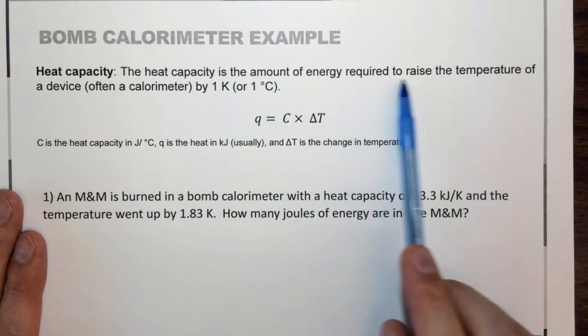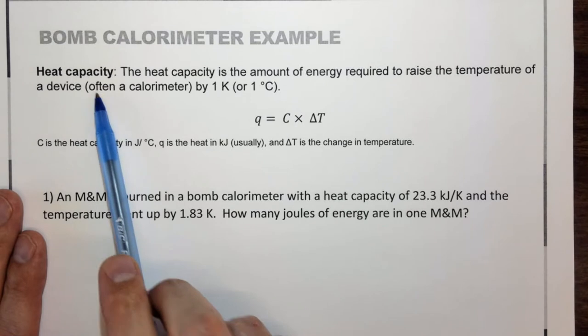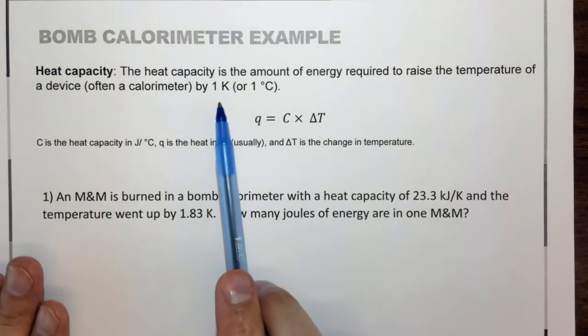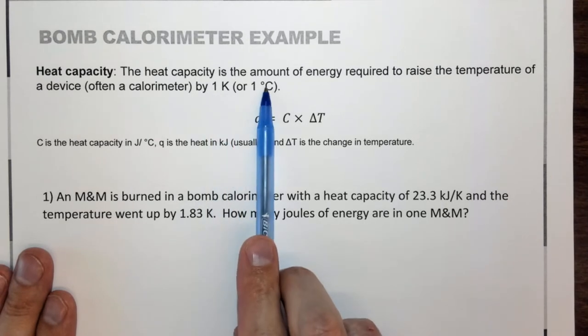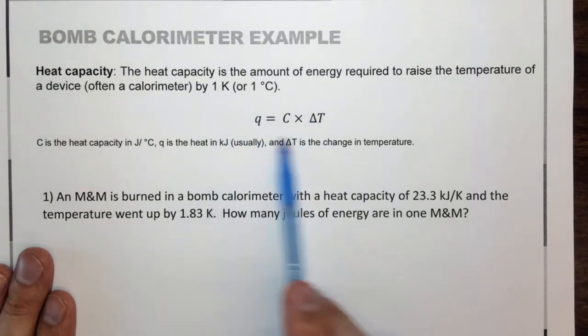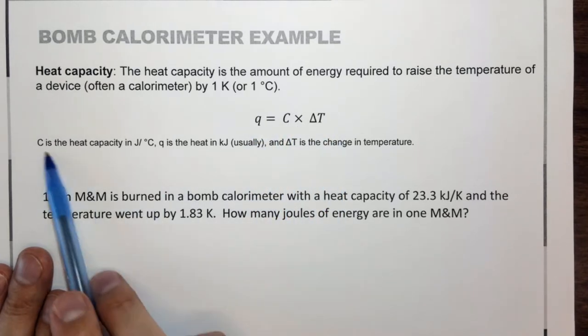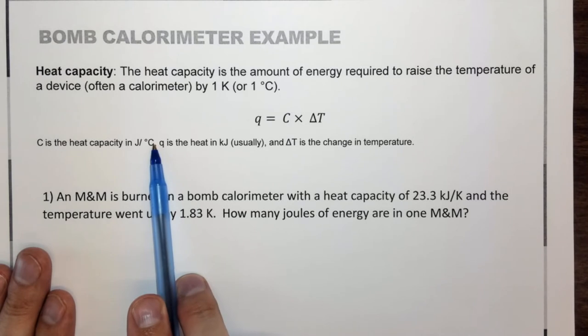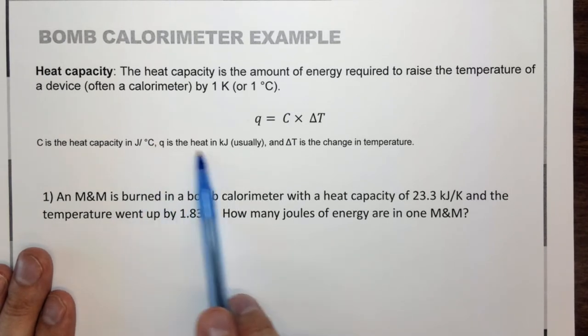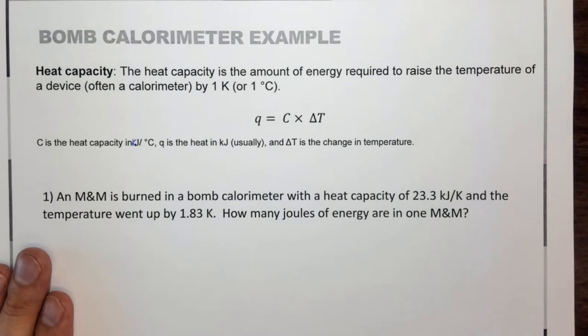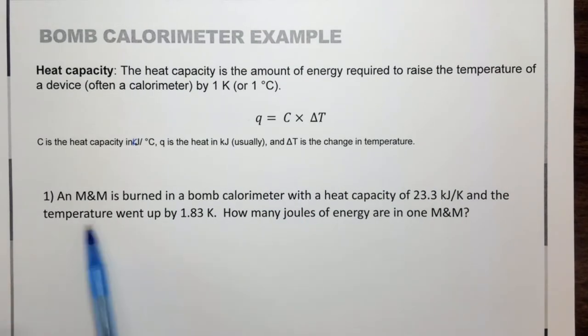So the heat capacity is the amount of energy required to raise the temperature of the device, often a calorimeter, by 1K or 1°C. And as you'll recall a temperature change of K or C is the same since it's a change in temperature. So here's the equation Q equals C times delta T, where C is the heat capacity in joules per degree C, sometimes they're in kilojoules per degree C, and Q is the heat usually in kilojoules. So this should probably be kilojoules because that's usually what it is, and delta T is the temperature change. So let's look at an example here.